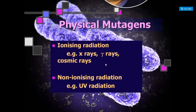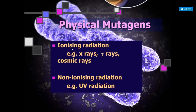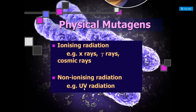Physical mutagenic agents responsible for mutations include ionizing radiations and non-ionizing radiations. Ionizing radiations include X-rays, gamma rays, and cosmic rays. These are called ionizing radiations because when biological molecules are exposed to them, they result in the formation of ions. Non-ionizing radiations include ultraviolet radiations, which do not cause formation of ions.